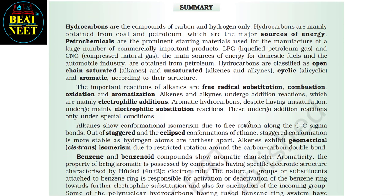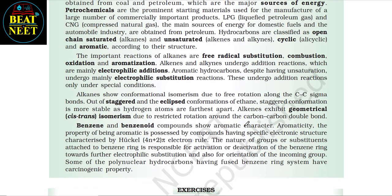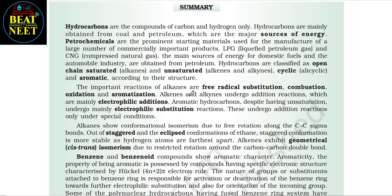Summary: hydrocarbons are compounds of carbon and hydrogen only, mainly obtained from coal and petroleum, which are major sources of energy. Petrochemicals are prominent starting materials for a large number of commercially important products. LPG and CNG, the main sources of energy for domestic fuels and the automobile industry, are obtained from petroleum. Hydrocarbons are classified as open-chain saturated (alkanes) and unsaturated (alkenes and alkynes), and cyclic — alicyclic and aromatic. The important reactions of alkanes are free radical substitution, combustion, oxidation, and aromatization. Alkenes and alkynes undergo mainly electrophilic addition reactions; aromatic hydrocarbons despite having unsaturation undergo mainly electrophilic substitution reactions, with addition reactions only under special conditions.